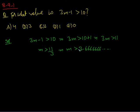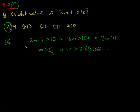That tells us m should be more than approximately 3.666. Looking at the answer choices, the only one greater than 3.666 is 4. That's how simple this first method is.